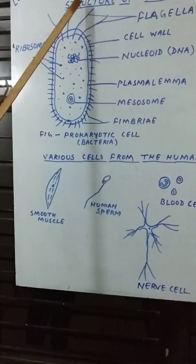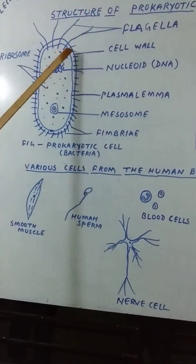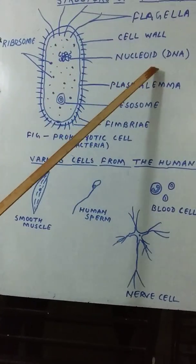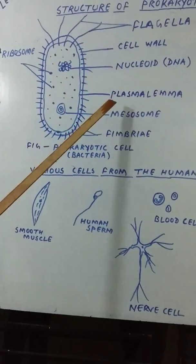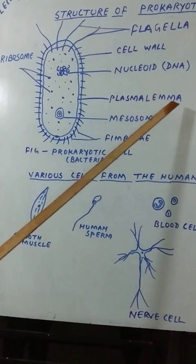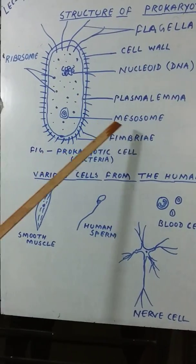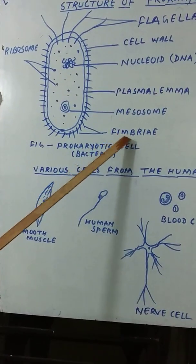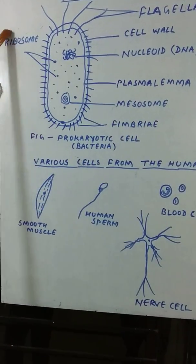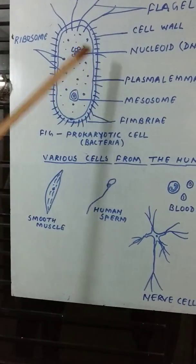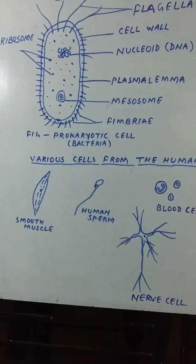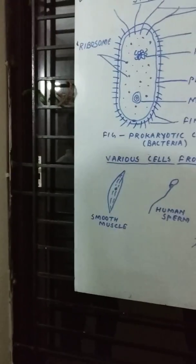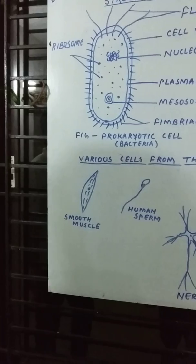Here these are flagella, this is the cell wall, nucleoid, plasma lemma, mesosome, ribosome. This is the structure of a prokaryotic cell, that is a bacteria.